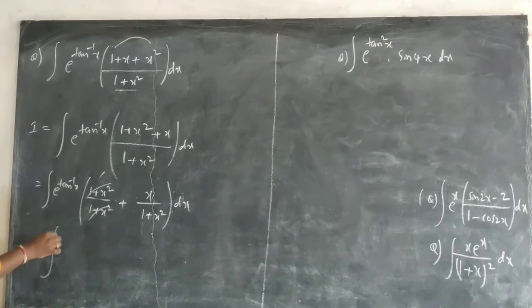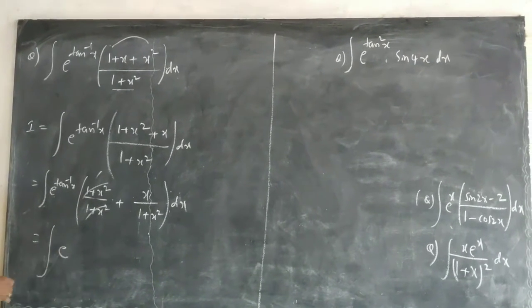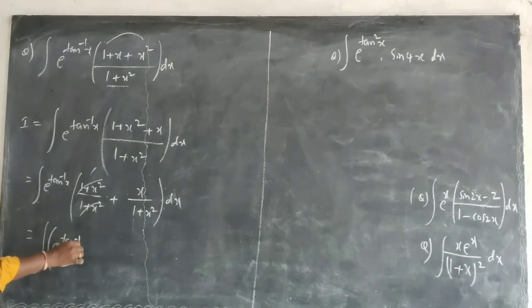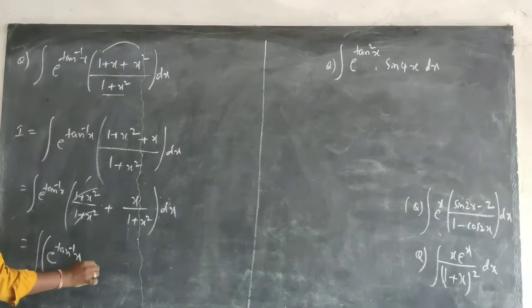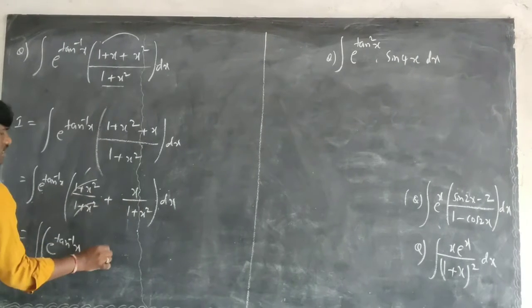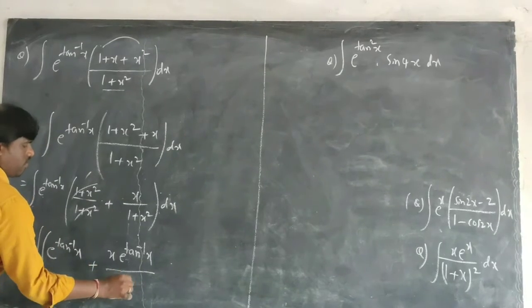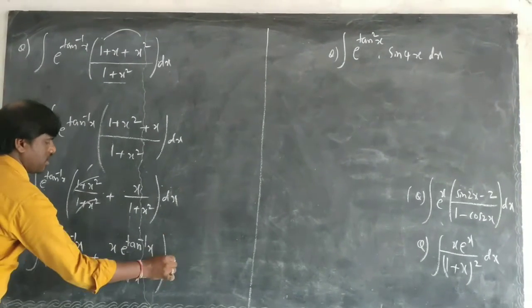Let us go ahead: integration of e^(tan^(-1)x), just multiply this here, e^(tan^(-1)x) plus x into e^(tan^(-1)x) upon (1+x²) dx.